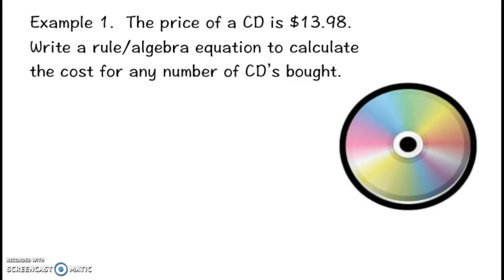The first thing you always need to do is figure out what your two variables are and how they're going to relate to each other—which one's dependent, which one's independent. We're trying to figure out cost compared to the number of CDs bought. You need to ask yourself, which one depends on the other? Does the cost depend on how many CDs you buy? Yes, it does. So the cost is the dependent variable.